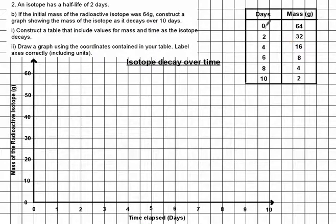Now I want to plot this. So down here I've got time elapsed in days. At 0 days, it's 64 grams. After two days, 32. Four days is 16, so I'm just reading these straight off the graph. Six is 8, eight is 4, and ten is 2.